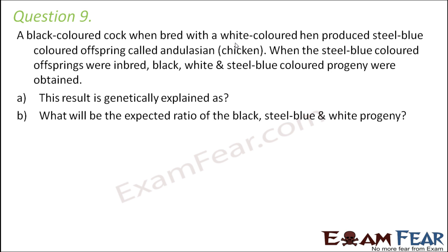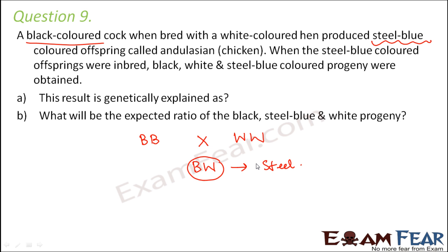Question number 9. A black-colored cock when bred with a white-colored hen produces steel blue-colored offspring called Andalusian. This result is genetically explained as incomplete dominance — where neither allele dominates the other, but an intermediate phenotype is obtained. The black colored cock can be represented as BB and the white colored hen as bb. As per complete dominance one color should dominate, but the output is steel blue — a different color altogether — confirming incomplete dominance.